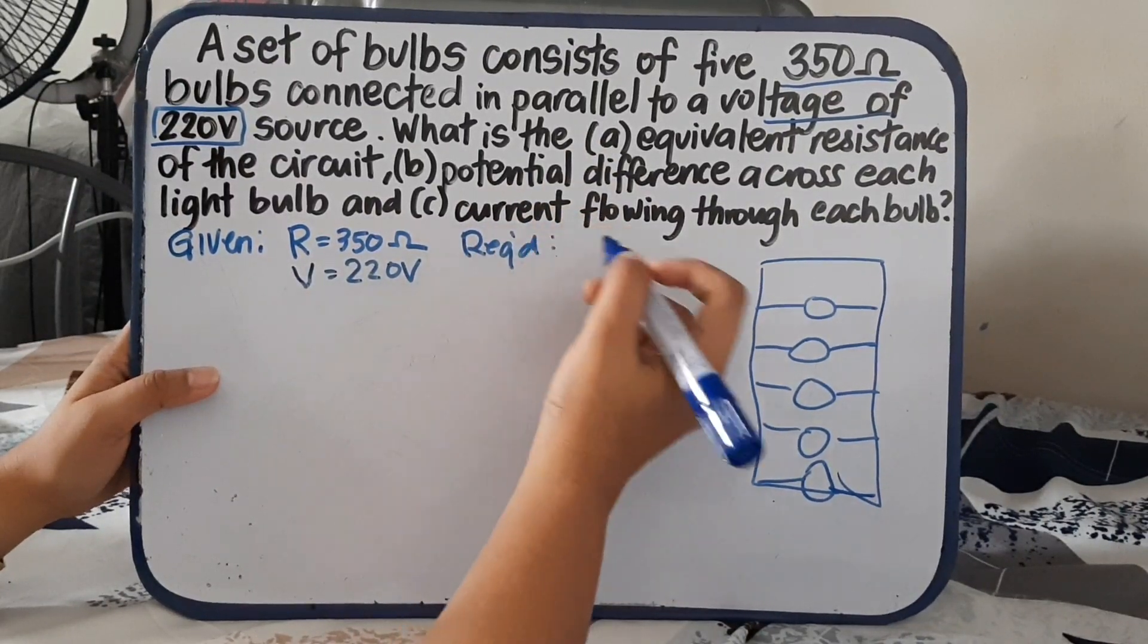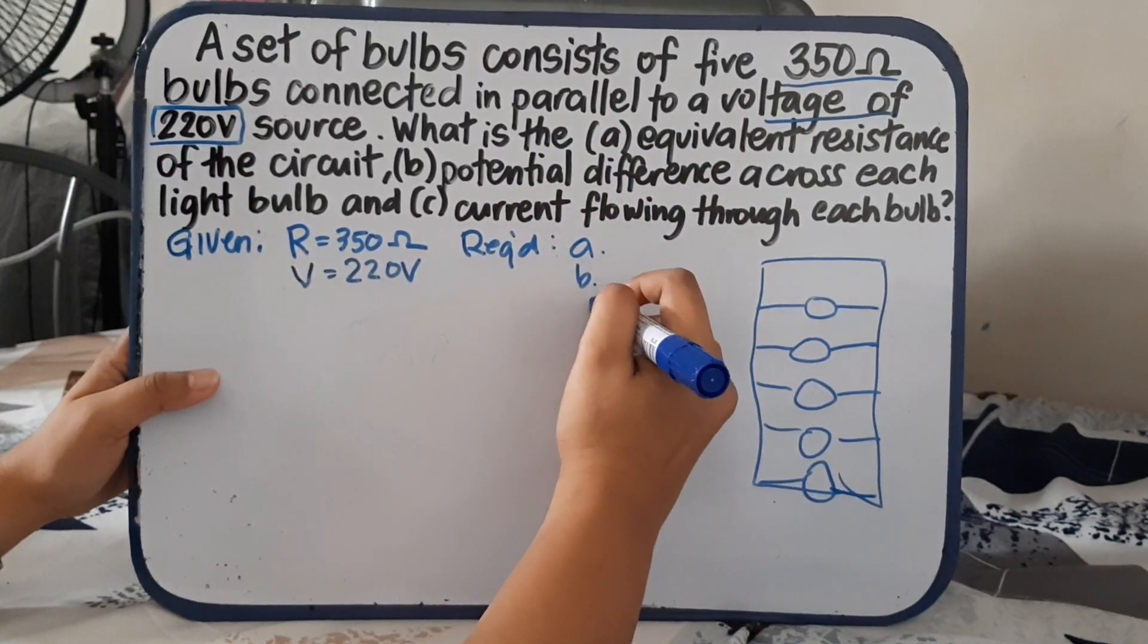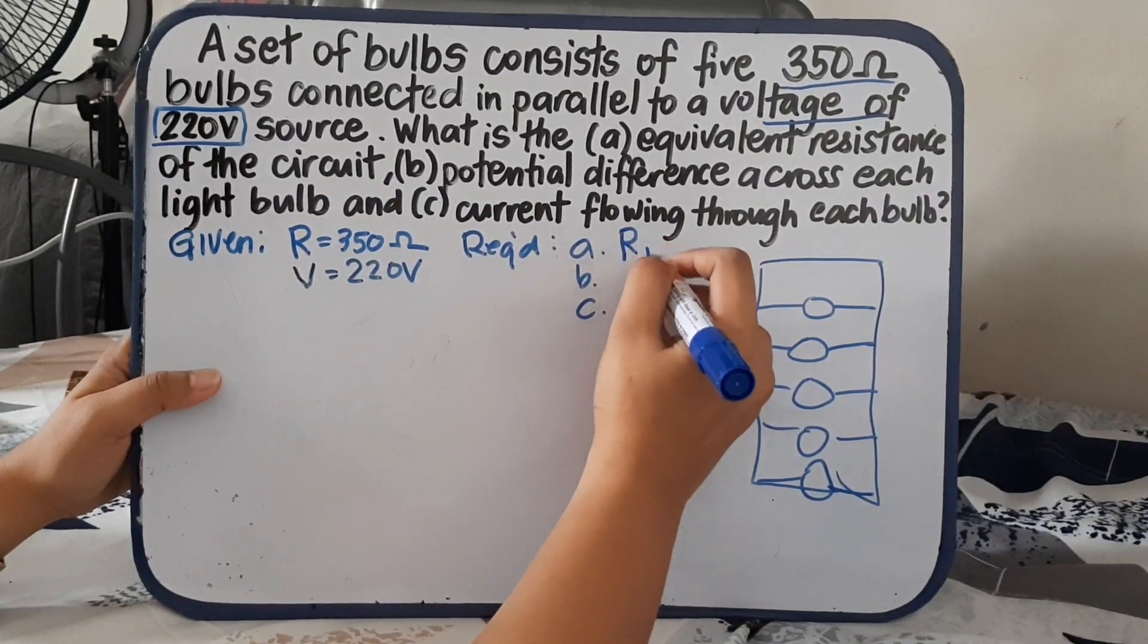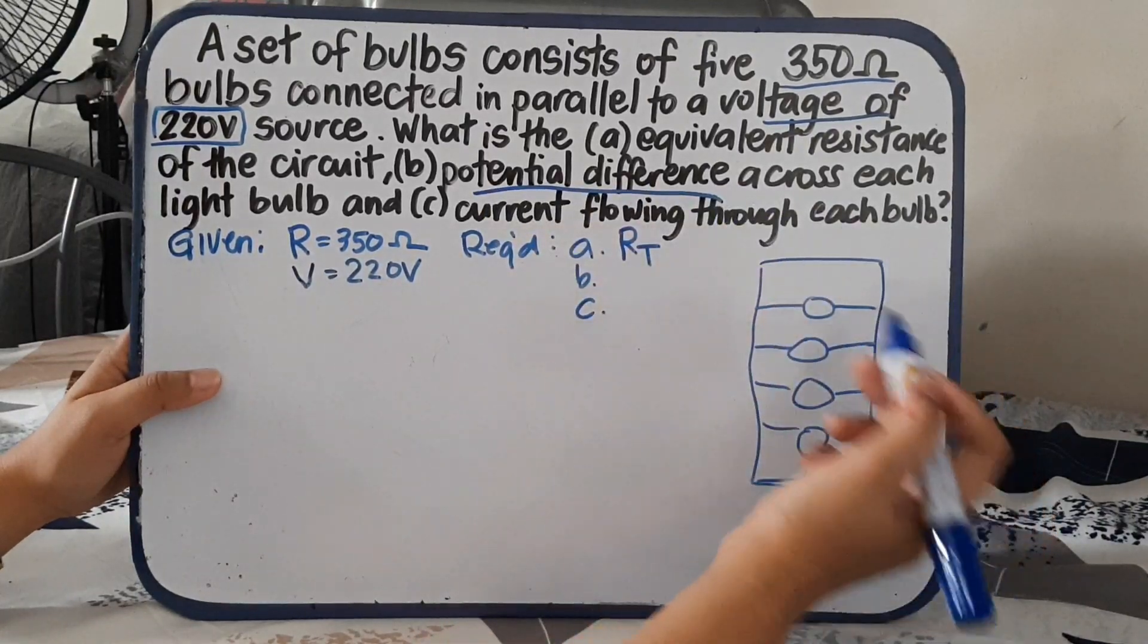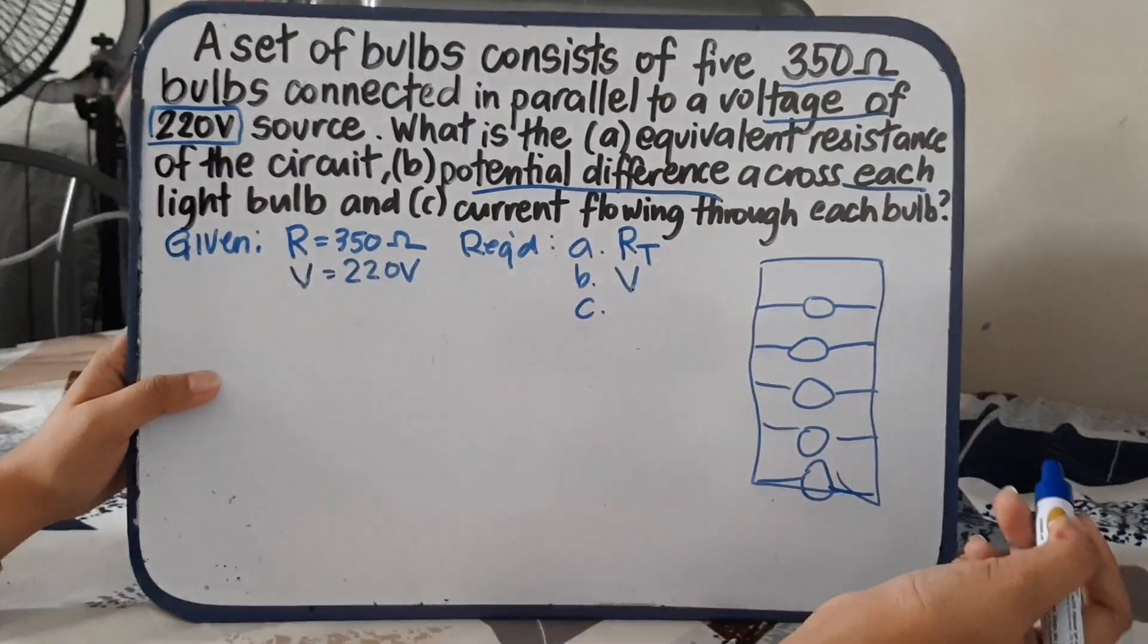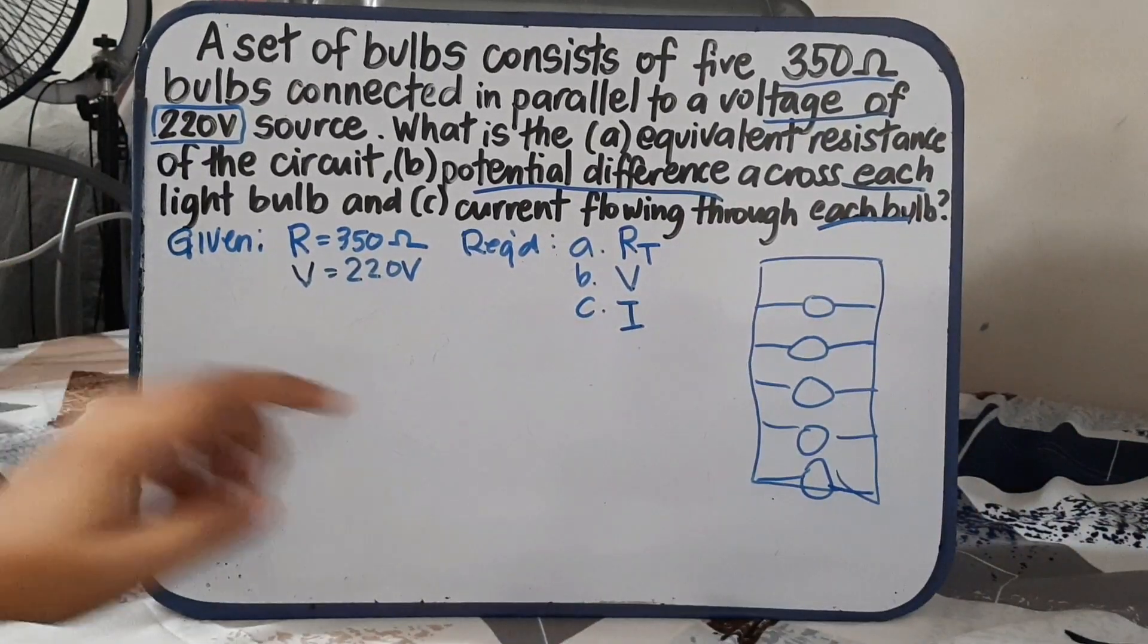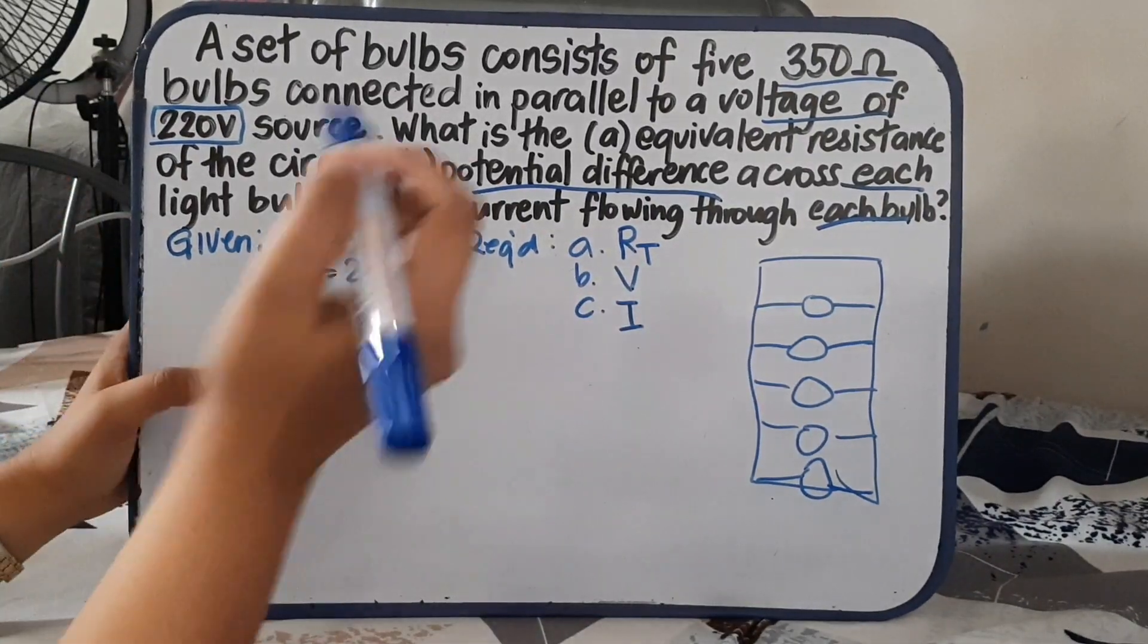What is our required? For the required, we have three. What is the equivalent resistance of the circuit? So we will find the total resistance. Potential difference, we are referring to the voltage across each. And then, find the current flowing through each. So that is the current of each bulb.